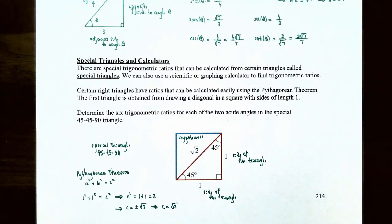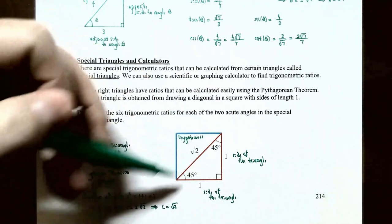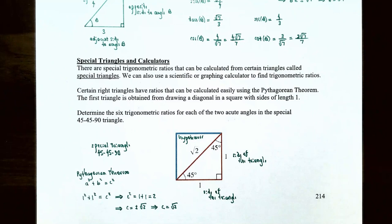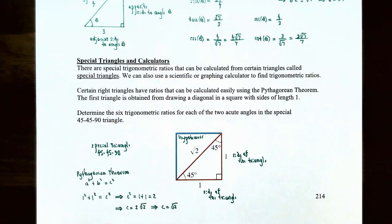Now let's talk about special triangles. There are special trigonometric ratios that can be calculated from certain triangles called special triangles. The first triangle is obtained by drawing a diagonal in a square with side length 1. We can use the Pythagorean theorem to find the length of this diagonal.